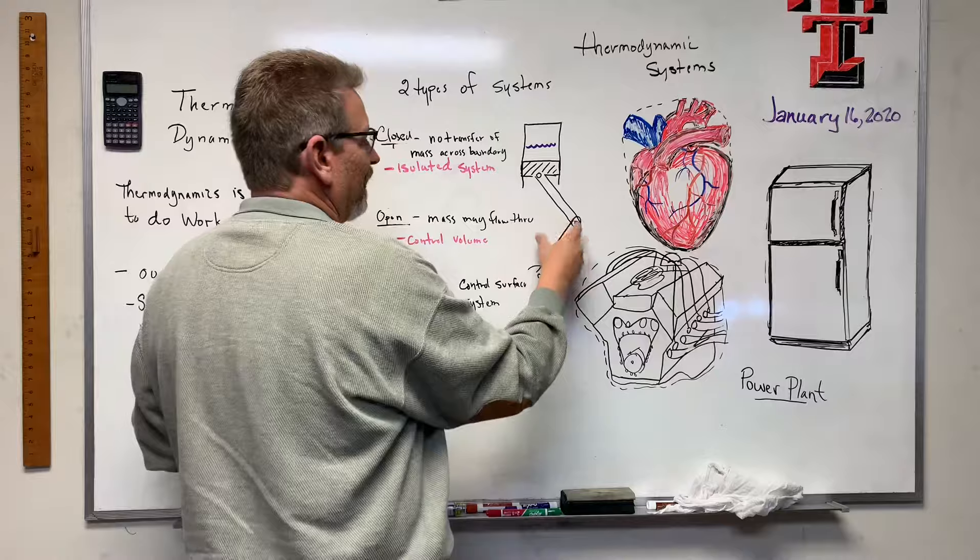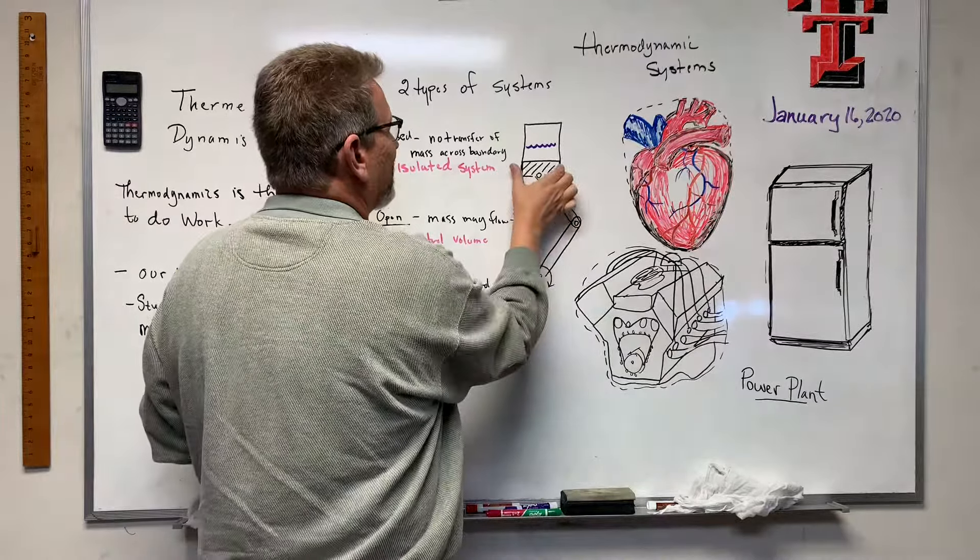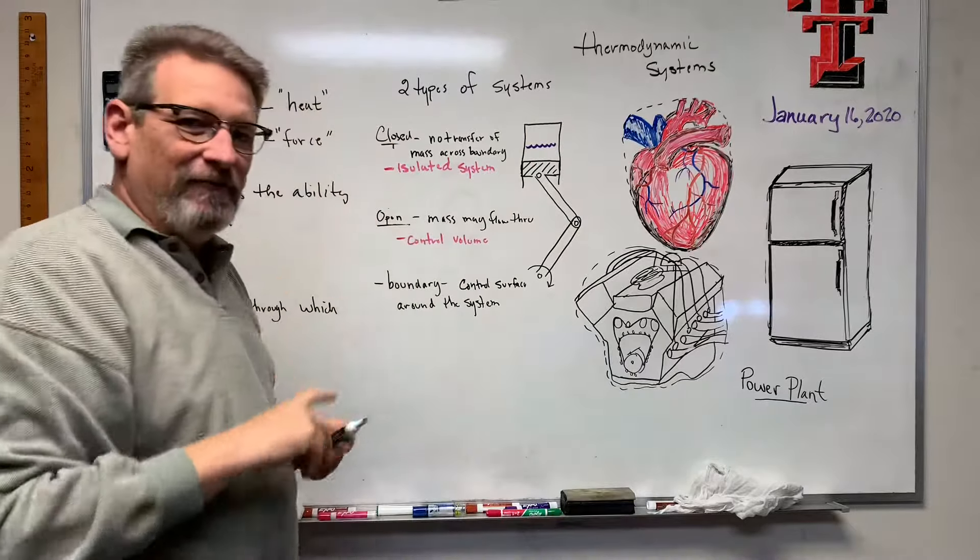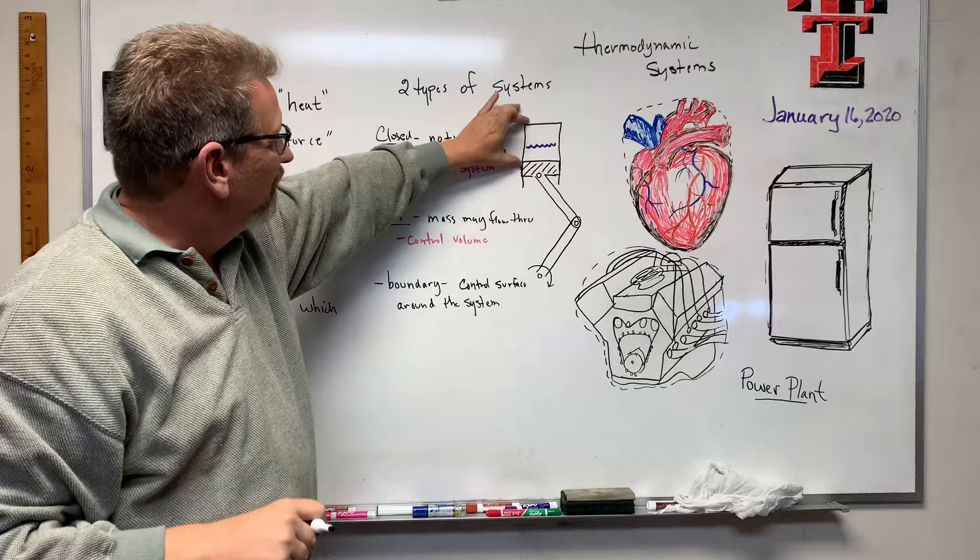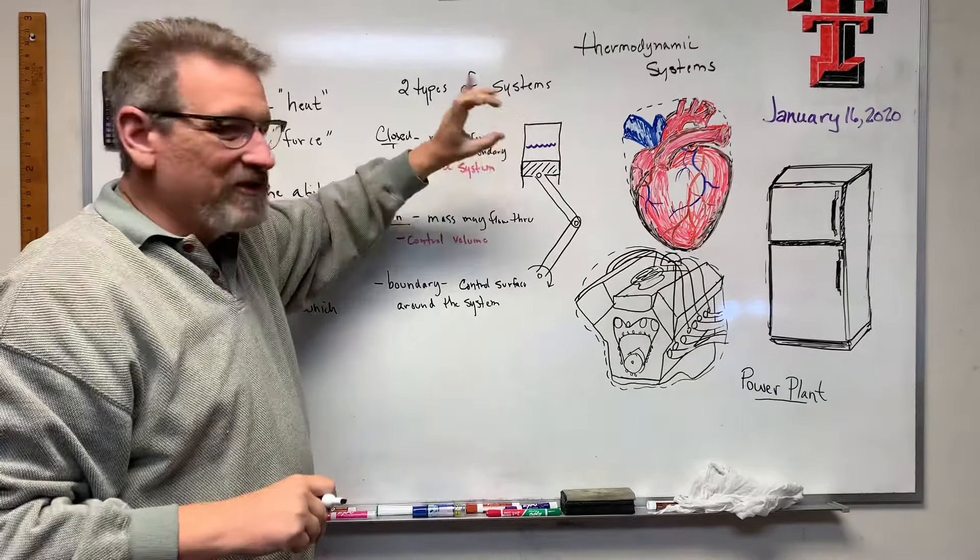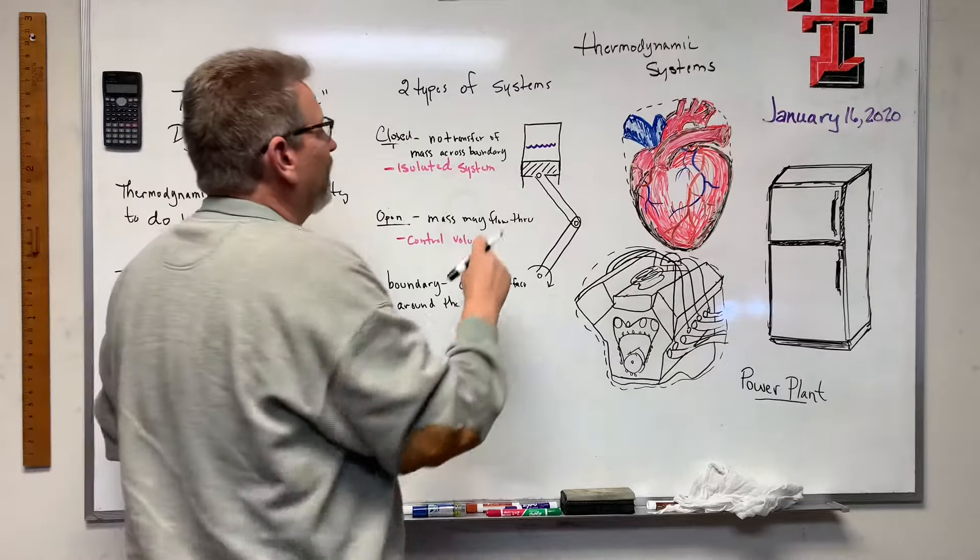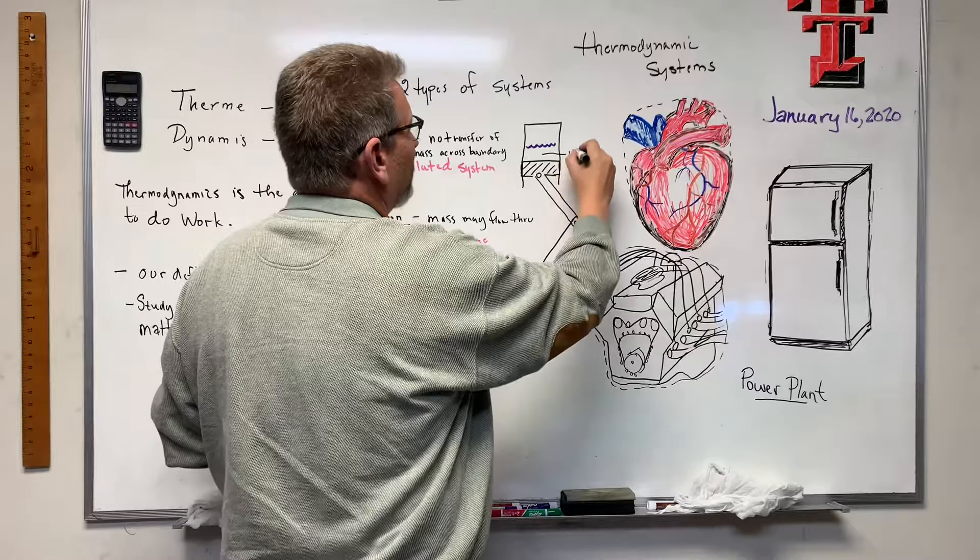A closed system: there's no transfer of mass across a boundary. Like here's a piston, right? So as this piston changes, it might go up or down, but the mass inside of that control volume there in an isolated system doesn't change. The mass stays the same, it's just being compressed.